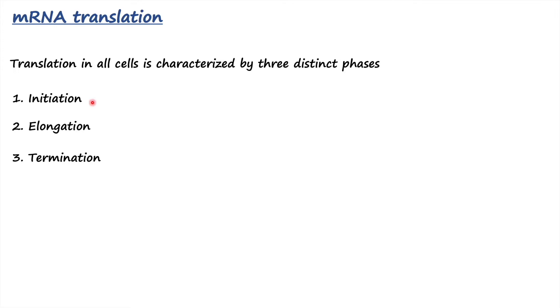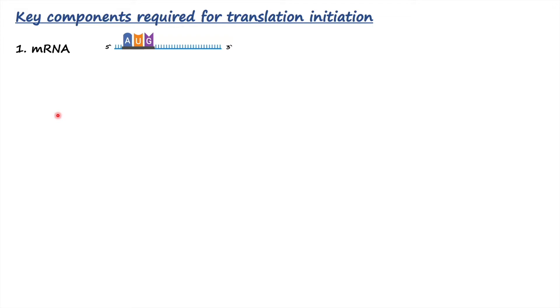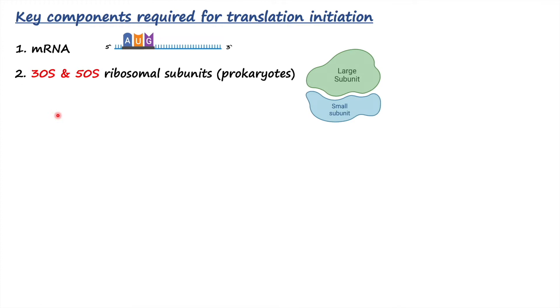In this lesson we are just going to focus on the initiation process of translation. There are some key components which are required for translation initiation. First is mRNA, because mRNA carries the codons which are required to code for amino acids to synthesize proteins.